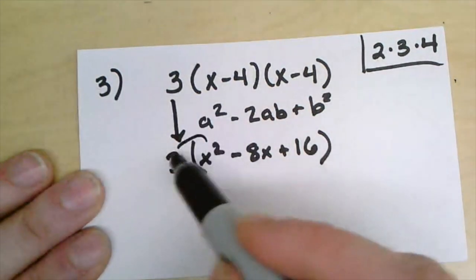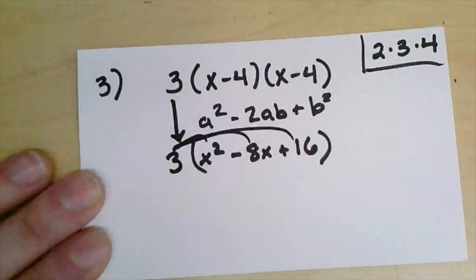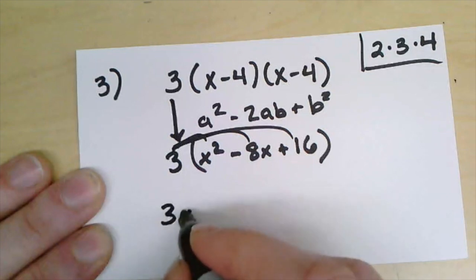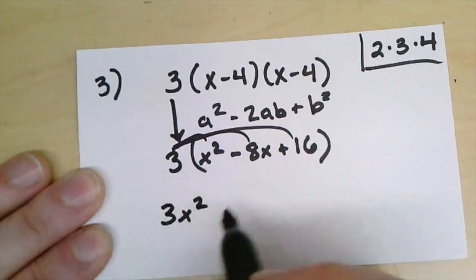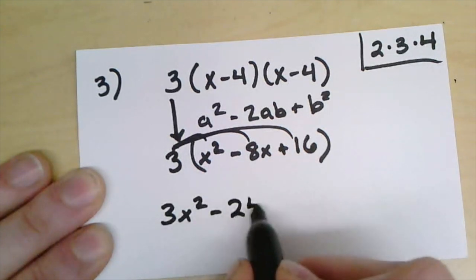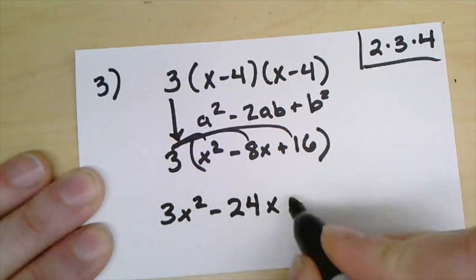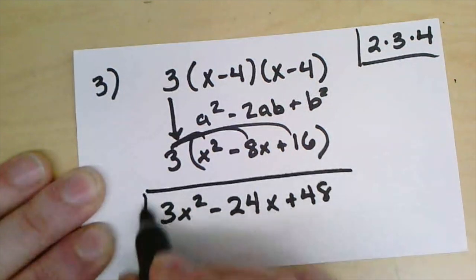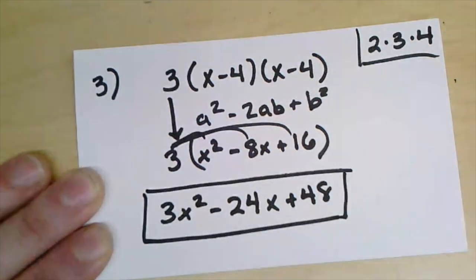At this point all we have is the distributive property and I just need to distribute a 3 to all the terms inside the parenthesis. If I do that, 3 times x squared makes 3x squared, 3 times negative 8x makes negative 24x, and 3 times 16 makes 48, so I'd have plus 48. And that would be my final answer right there.